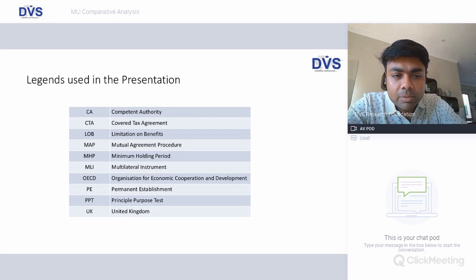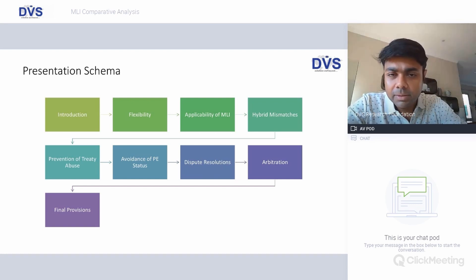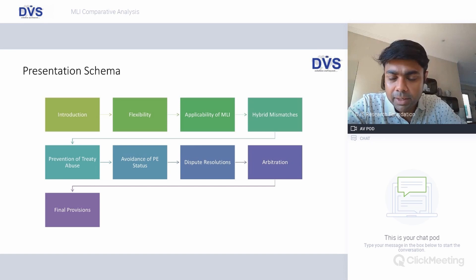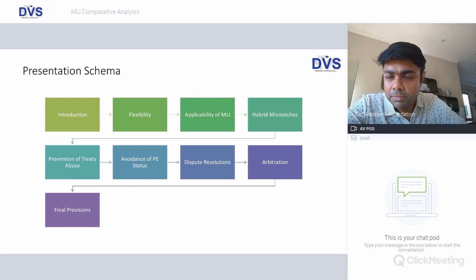These are some of the terms we will be covering — most of it is something we have already covered in earlier sessions. The schema for the day: a quick peek on MLI and the flexibility it provides, and the applicability of MLI hybrid mismatches. For each of the seven categories of MLI provisions, we shall look at the position of India, the position of the other three countries, and how the DTA provisions will get applied in the MLI regime.